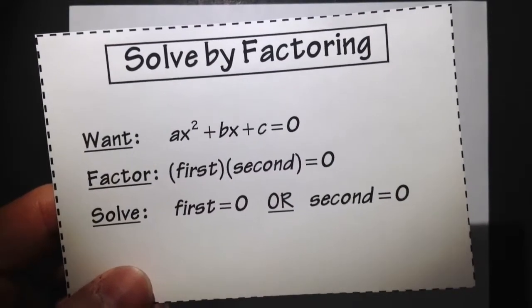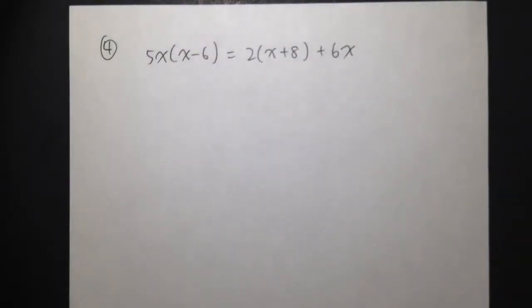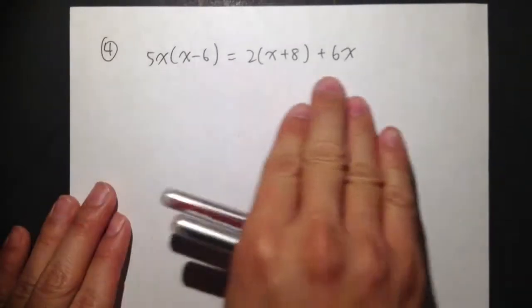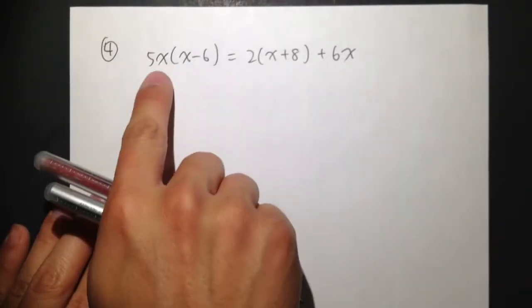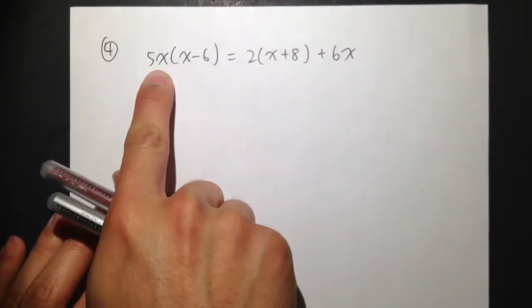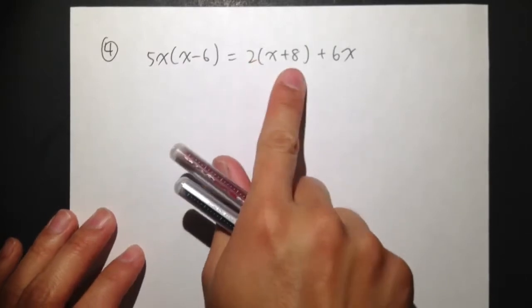Solve quadratic equation by factoring. Example number 4. So in this case, I see I have an equation, but I have a parenthesis, and I have a 5x in front of the parenthesis. I have these two in front of these parenthesis.